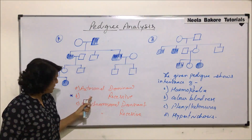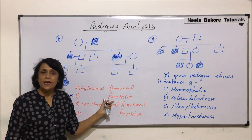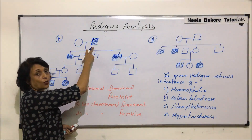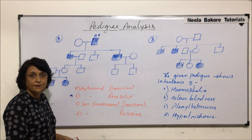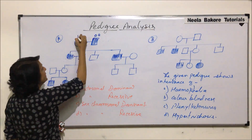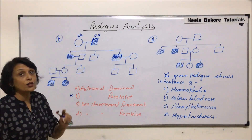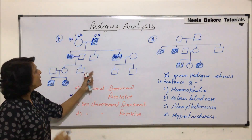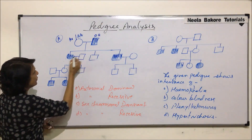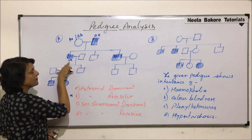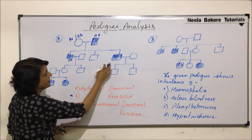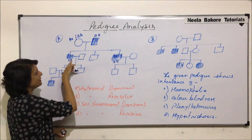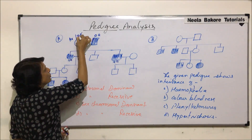Let us cross-check using an autosomal recessive disorder like sickle cell anemia. The affected individual is showing the trait, so we take it as recessive. The female is not showing anything, so she may be homozygous dominant or a carrier. The affected daughter received one recessive allele (small 'a') from the father and one from the mother.